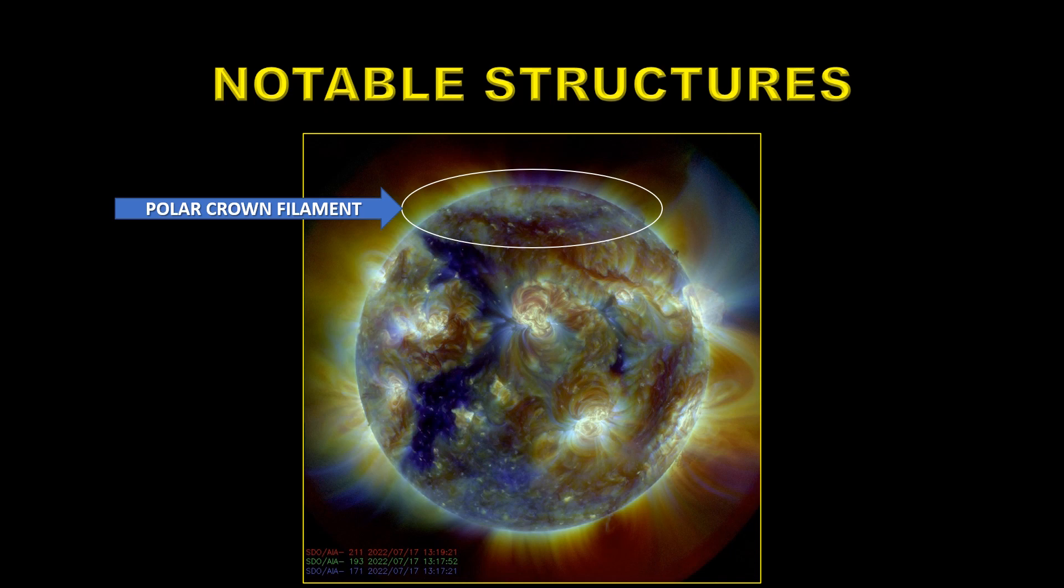These are interesting because sometimes they erupt, sometimes the whole thing can erupt which can be quite spectacular. But it marks the boundary between the positive field in one area and the negative field in another. That's where filaments form. But the thing to note really here is how large this coronal hole is at the pole. That's a good indicator that we're nowhere near solar maximum yet because that polar coronal hole disappears at solar maximum.